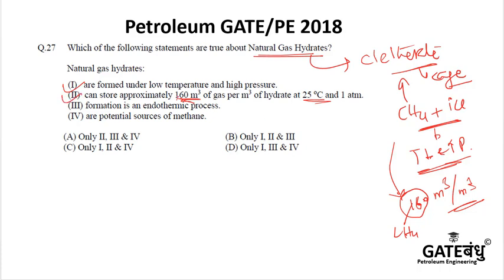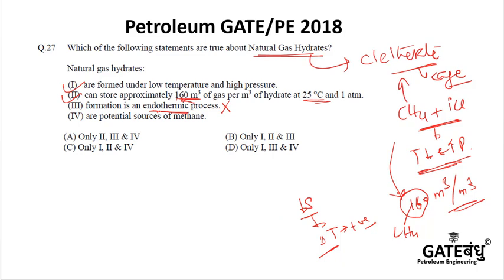This storage fact is correct. However, the option stating that formation is an endothermic process is incorrect. In thermodynamics, when entropy decreases, the process has to be exothermic. Delta H must be positive — the decrease in randomness of gas particles results in release of heat, which balances the decrease in randomness. So the 'endothermic' option is not correct; if it had said exothermic, it would be right.